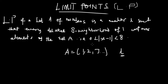From my previous video on neighborhoods, I stated that once you learn any topic you'll be implementing it in subsequent topics. To understand deleted delta neighborhoods, go to the playlist and watch that video, then come back here. The deleted delta neighborhood notation is: absolute value of x minus L is greater than zero and less than delta.